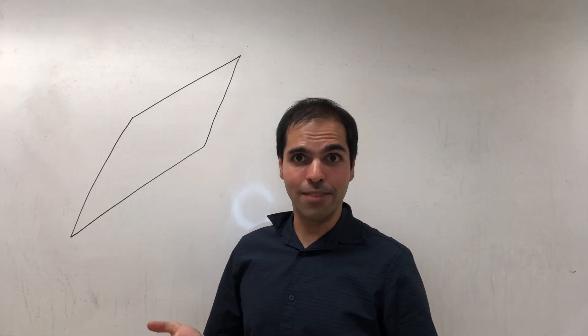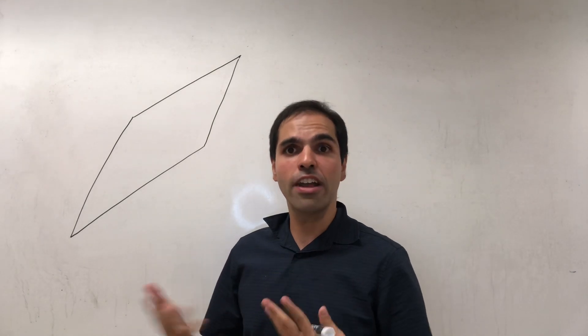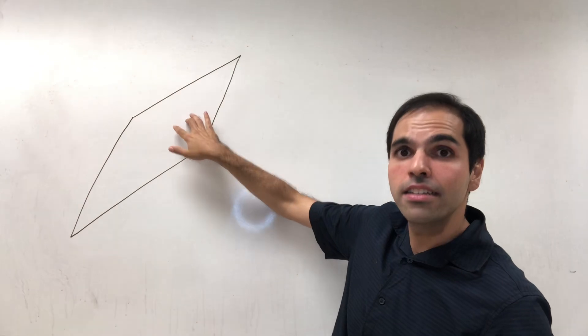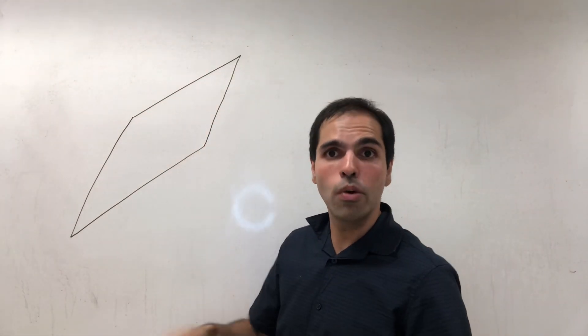All right, what does a determinant measure? It's the signed area of a parallelogram. In particular, the idea is first let's chop off or decompose this parallelogram into easier figures.